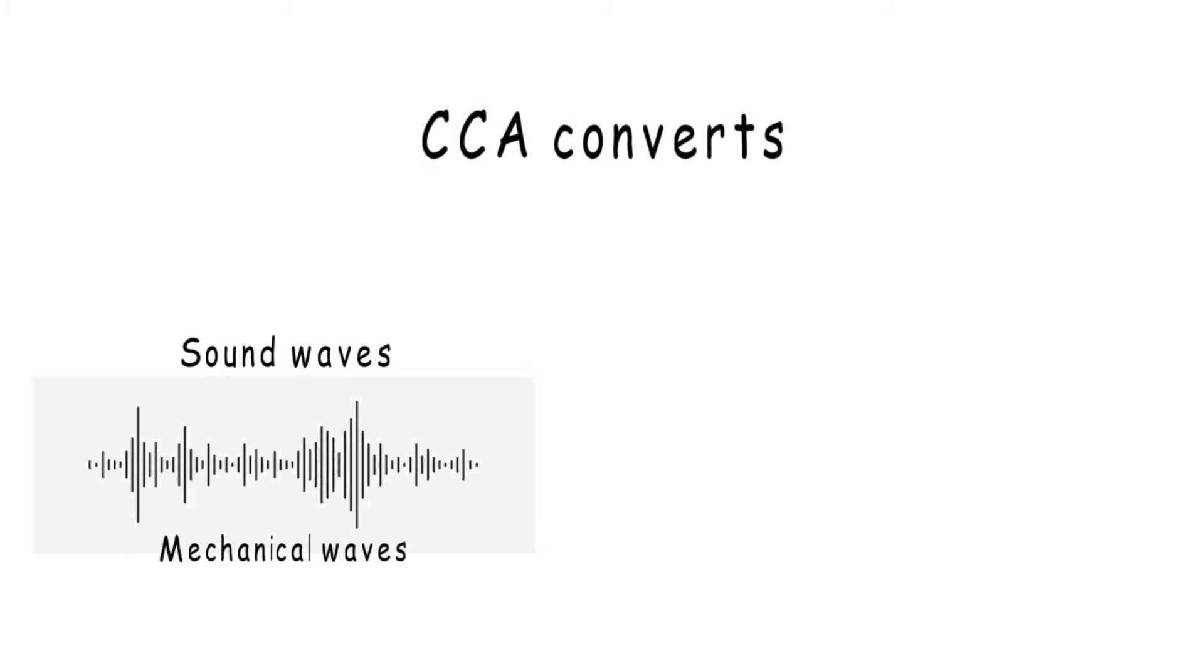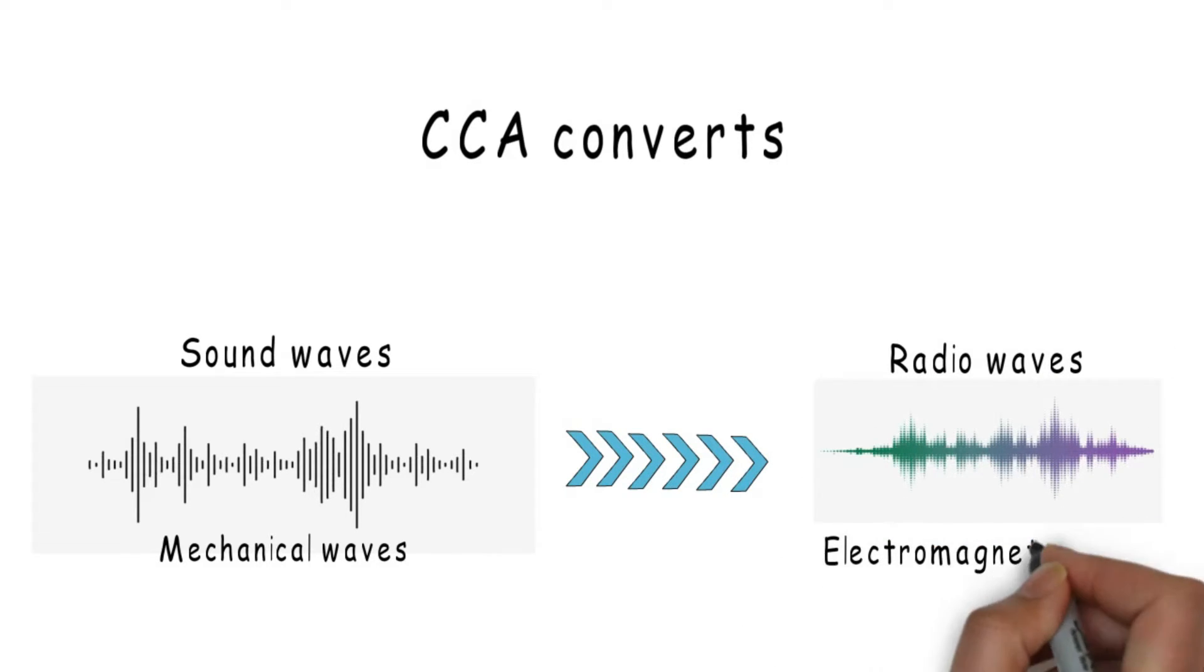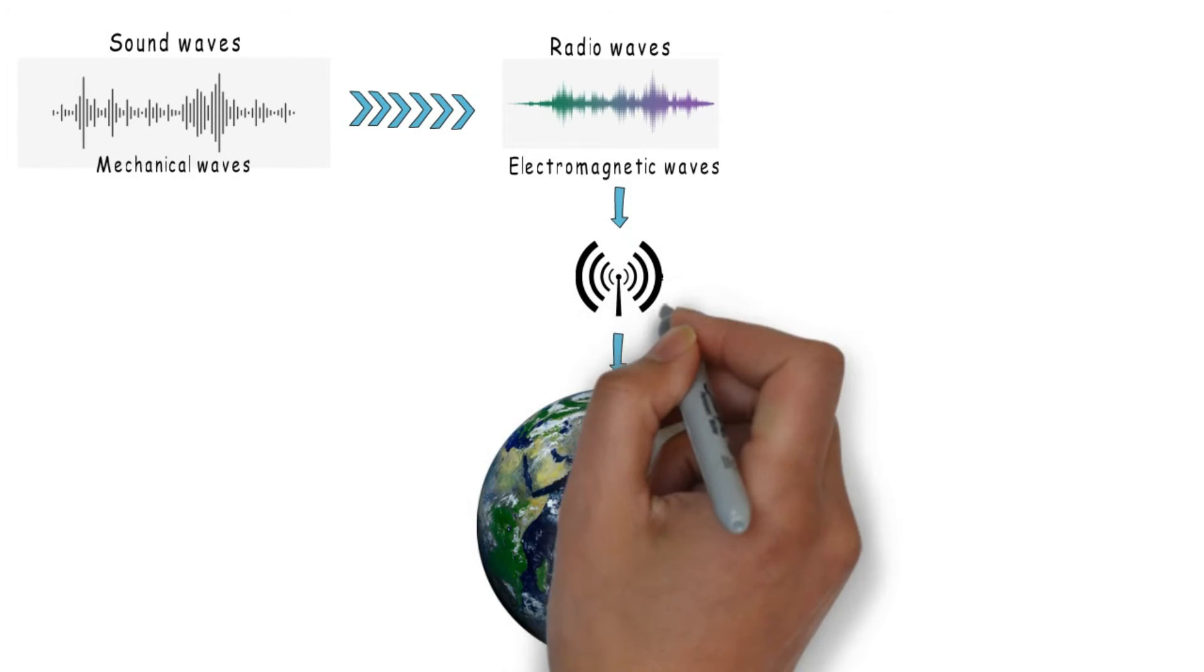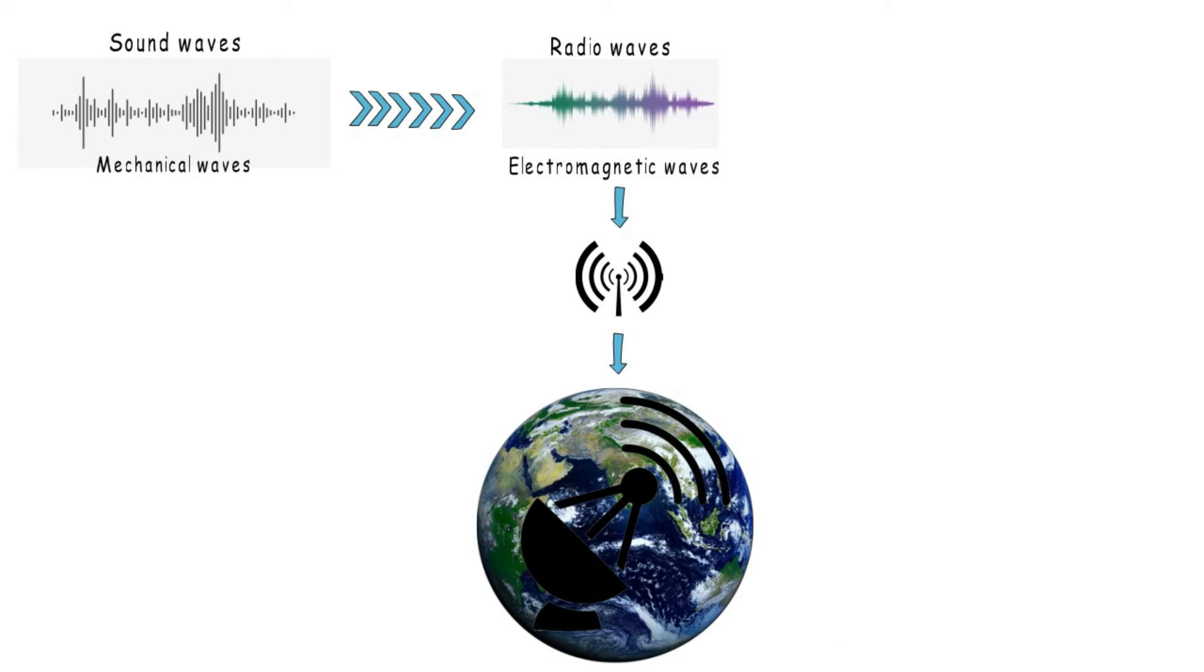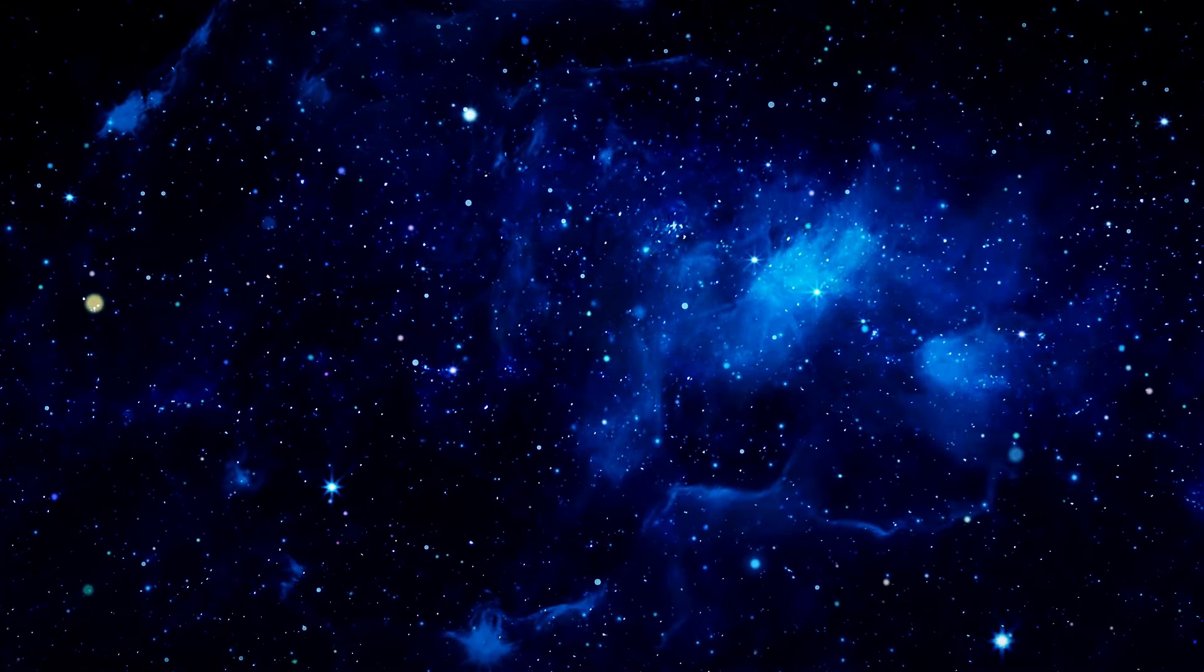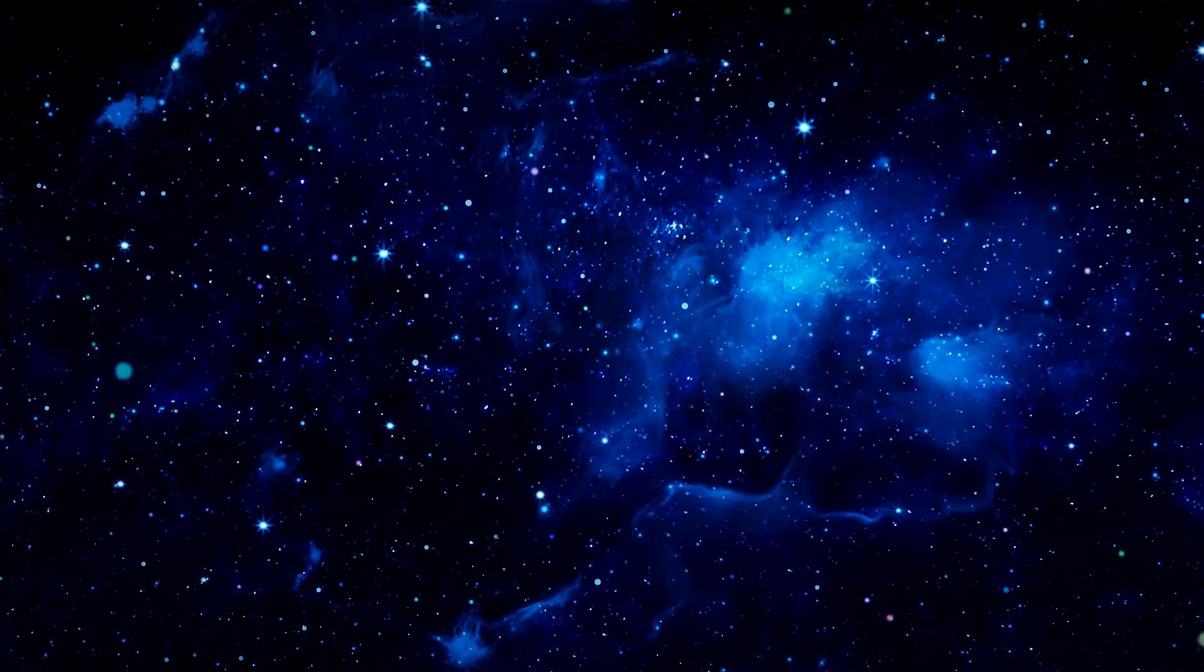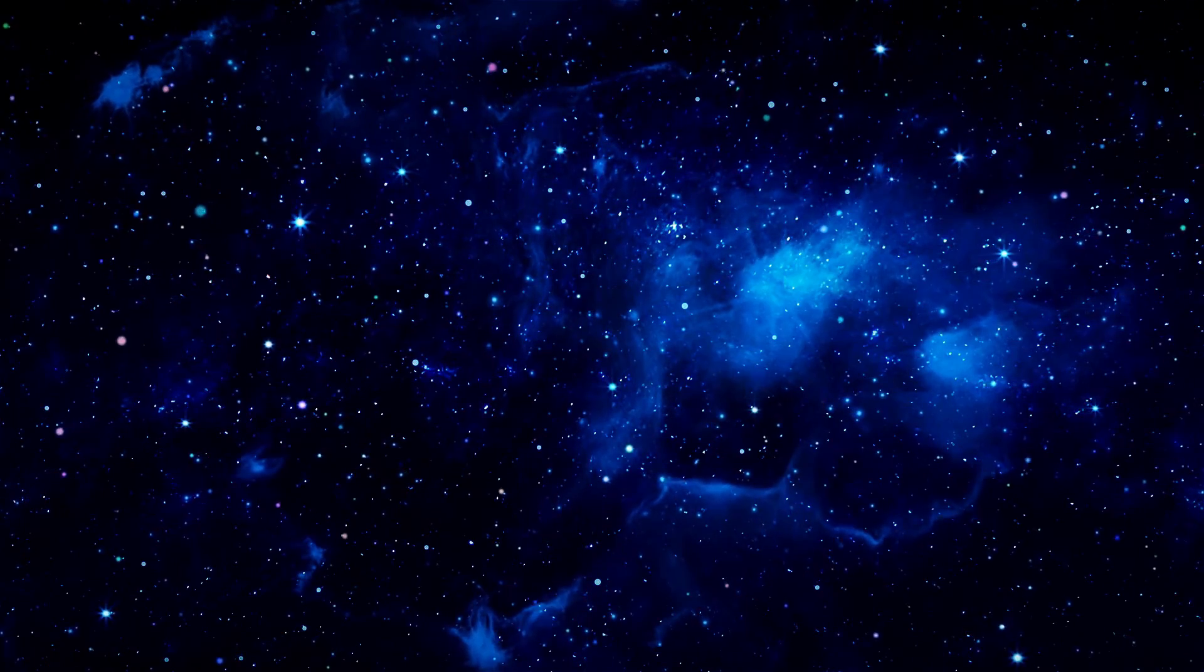The device transfers the sound waves, or mechanical waves, from the voices of astronauts to radio waves, or electromagnetic waves, which are transmitted to the ground by a transmitter. After reaching Earth, these are detected by antennas or detectors, and then these radio waves are heard by the researchers and scientists. In this way, the voice of astronauts reaches Earth.